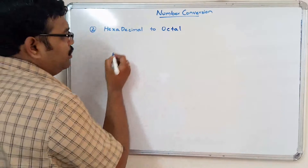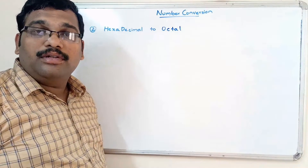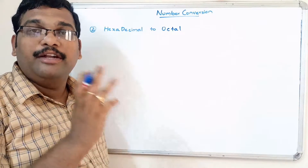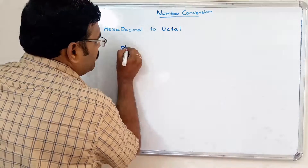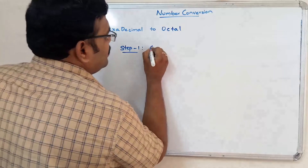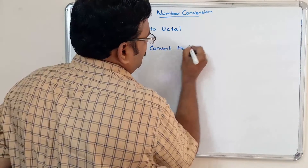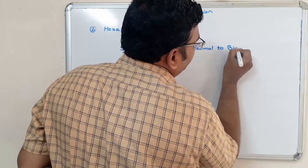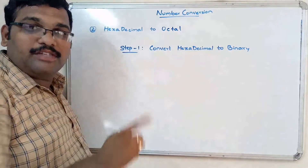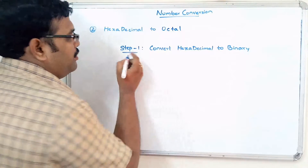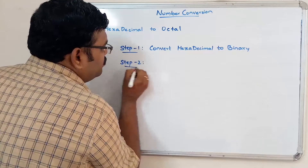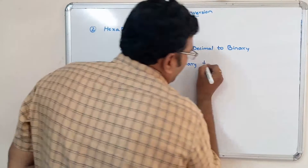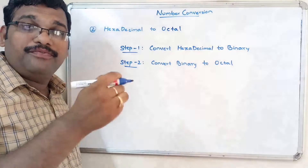Now the third conversion: hexadecimal to octal. A direct conversion is not available, so the same approach as octal to hexadecimal applies — it is done in two steps. Step 1: Convert hexadecimal to binary by representing each positional value in a 4-bit group. Step 2: Convert binary to octal by grouping into 3 bits. If a group has fewer than 3 bits, add zeros to the left of the MSB to form a complete 3-bit group.